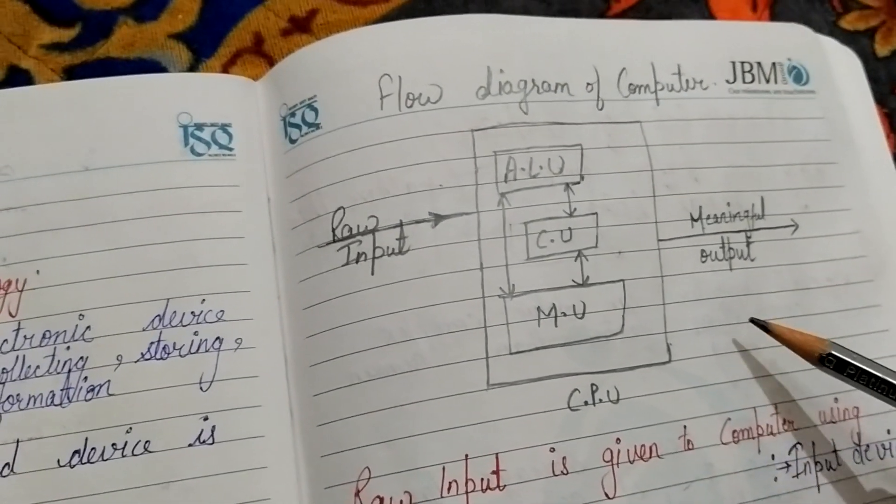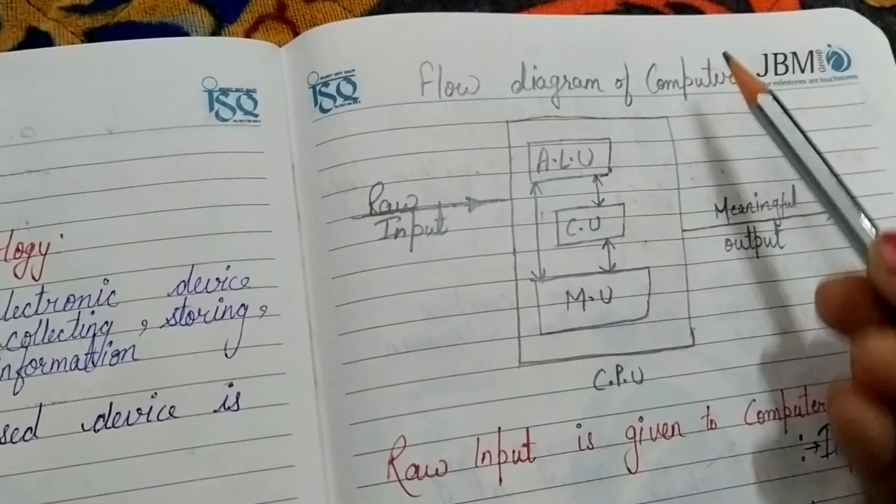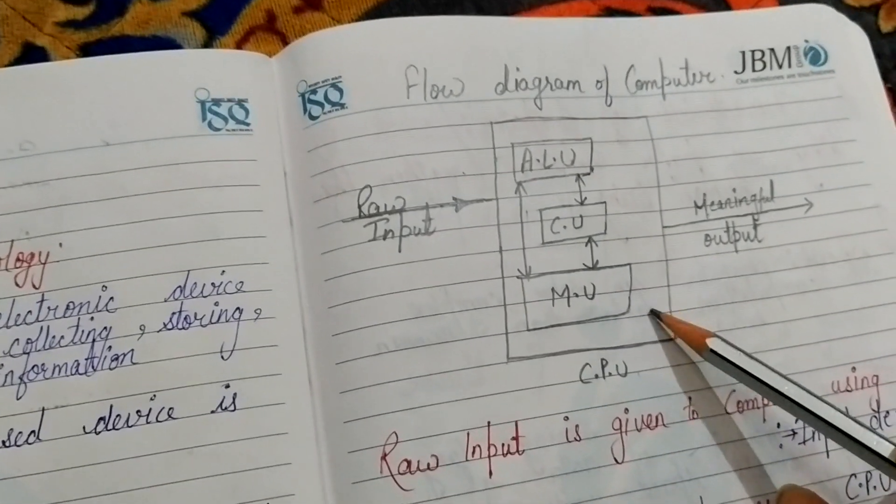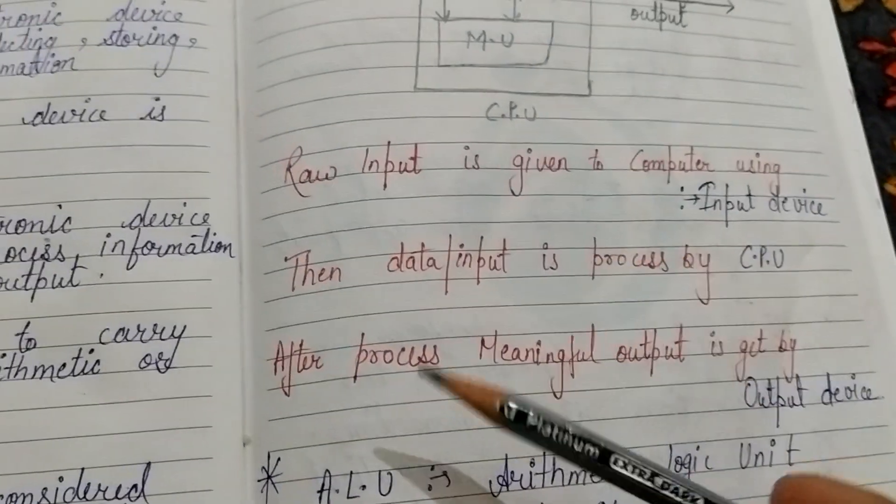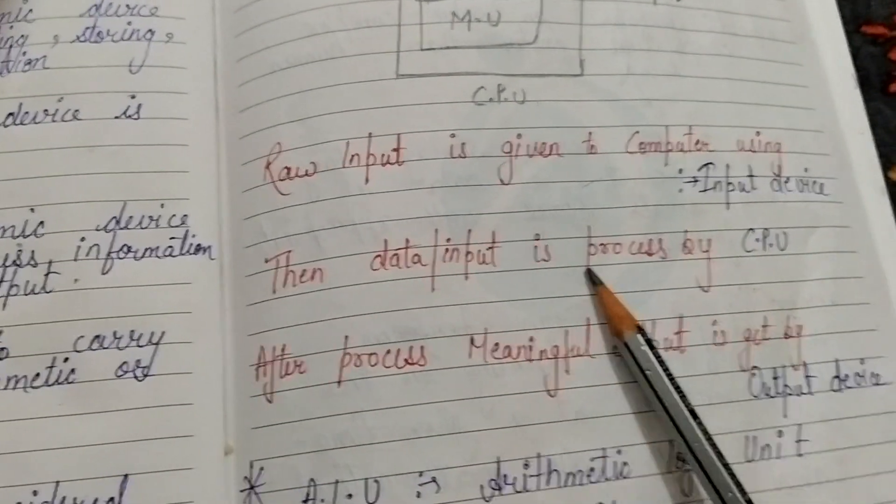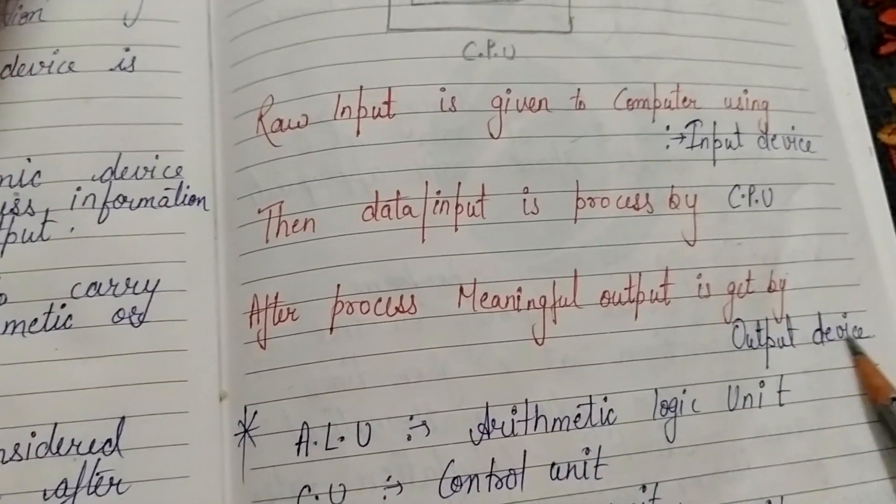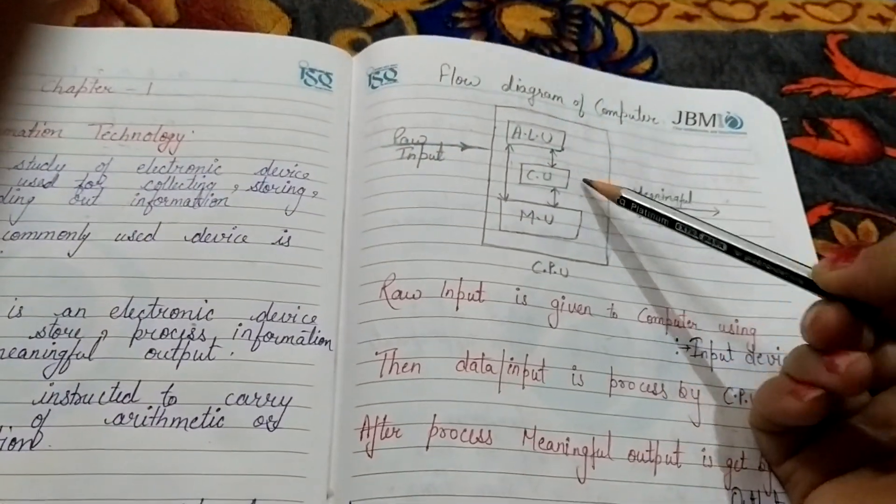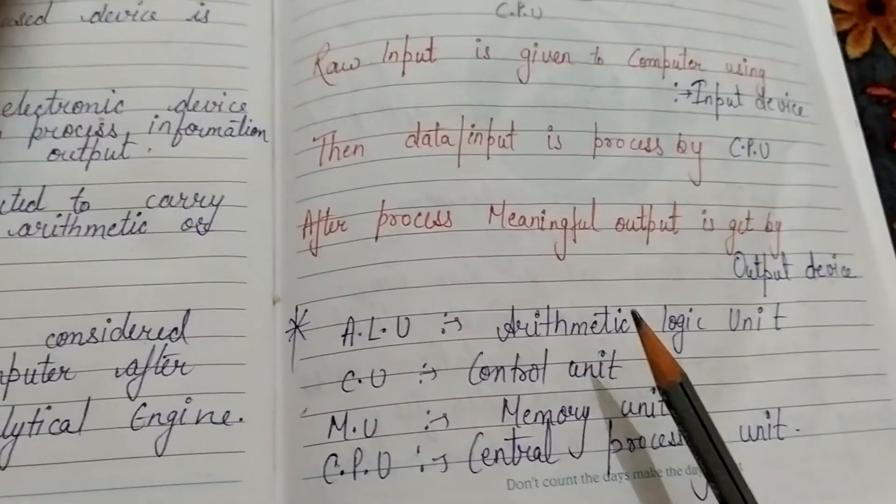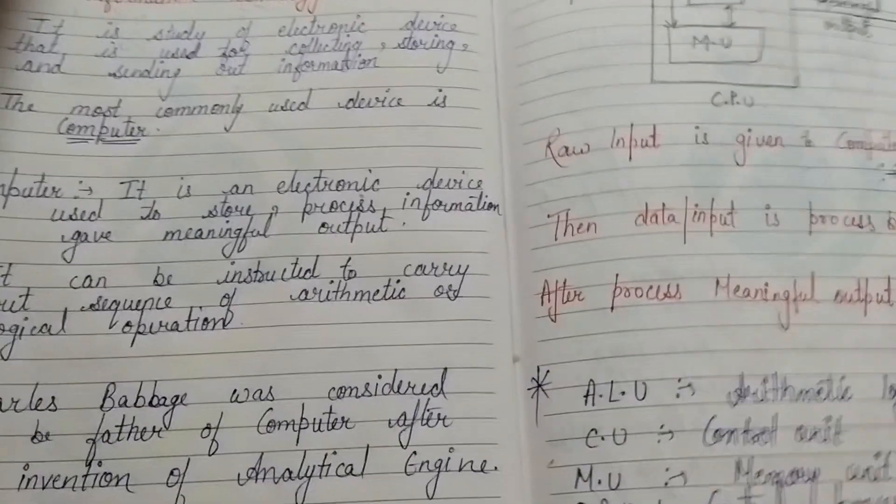Then, whatever flow diagram or diagram you make, you will make it using pencil and scale. Then we will make a flow diagram of computer: when any raw input is given, it comes to your CPU. In CPU you have ALU, CU, and MU. Then from there you get a meaningful output. I have written: raw input is given to computer using input devices, then data or input we gave is processed by CPU. After processing, the meaningful output we get comes from output devices. The short forms we used—ALU, CU, MU—please prefer their full forms: ALU is Arithmetic Logic Unit, not Arithmetical and Logical Unit. It is Arithmetic Logic Unit, Control Unit, Memory Unit, Central Processing Unit. These are your notes.